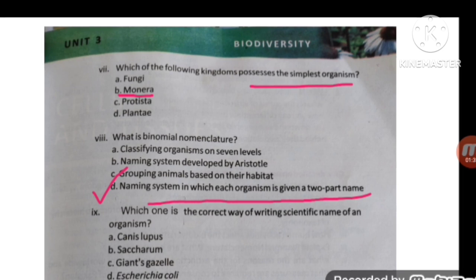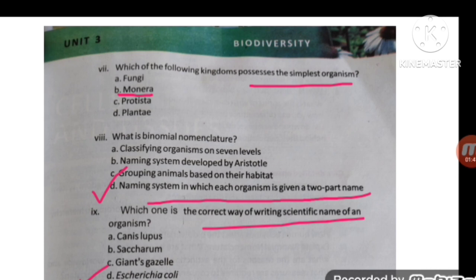The next MCQ is: which one of the following is the correct way of writing the scientific name of an organism? The correct way is option number D, Asterias oculi.